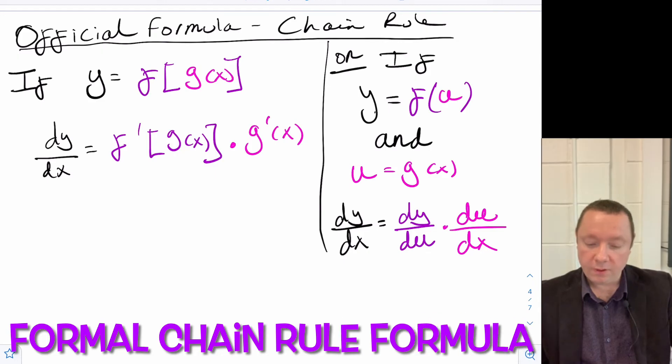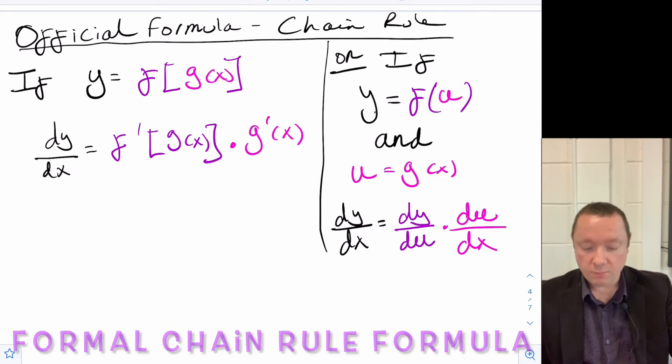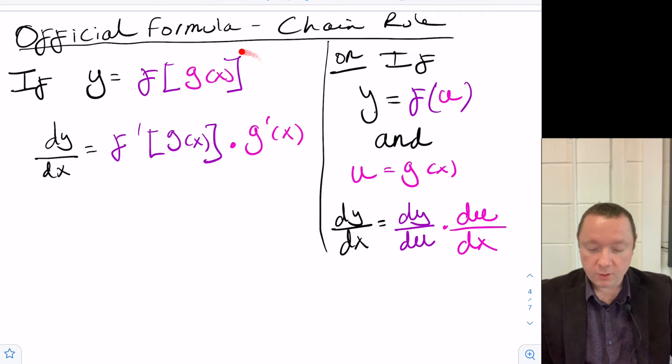Okay, our official formula then for the chain rule. So if you've got y equals some function of another function of x, f of g of x, to differentiate that, you do differentiate f, the function with respect to g of x, but then times by g of x differentiated. Or in terms of Leibniz notation, if f is some function of u, f of u, and u is some function of x, g of x, then dy/dx, you might be familiar with this, it's just simply dy/du times du/dx.